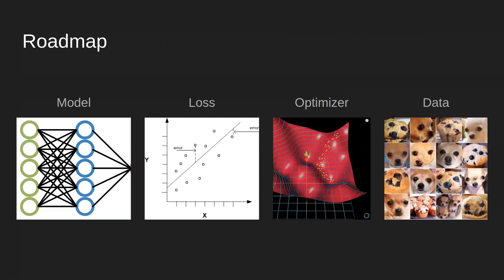Now we'll get into the meat of the presentation. Here's a roadmap for the pieces of a deep learning model you should be aware of: a model, which makes predictions; a loss function, which tells you how right or wrong your prediction is; an optimizer, which tells you how to update the model's weights; and finally, a dataset, which contains the information you're actually trying to learn from.